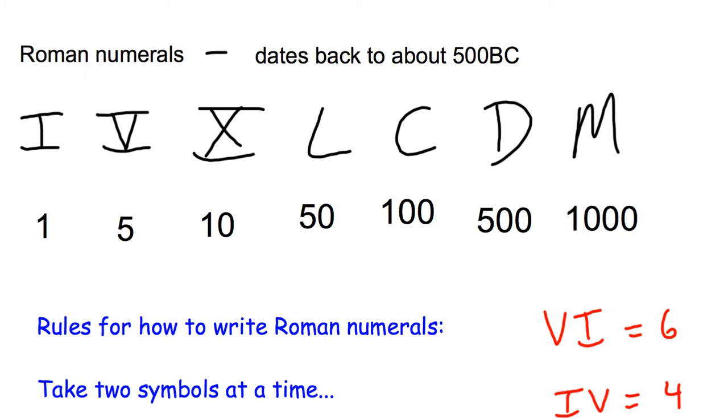Some of them I can remember. C, I remember for century. That's how I remember the 100. And M is mil in Latin. It's not a million, it's 1000. Those sort of help me. Otherwise I just have memorized, for example, the L for 50 and the D for 500.